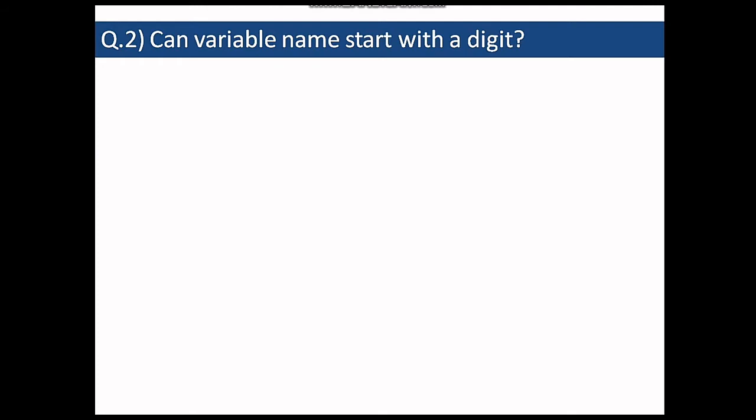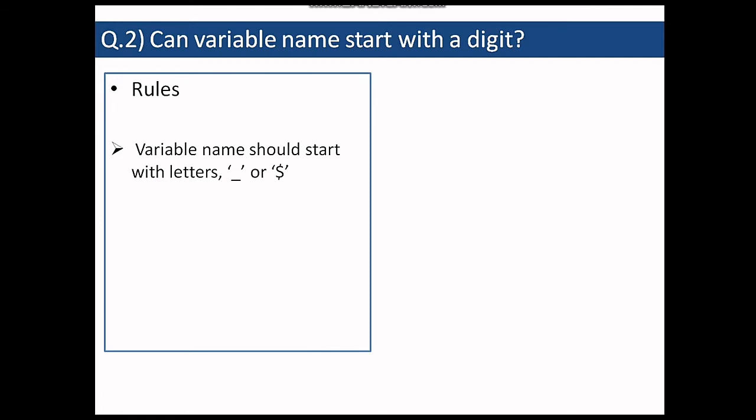The next question is can variable name start with a digit? So the answer is no, because there are some rules and conventions to follow while naming variables. So let's see both. First we'll see rules that are predefined by Java and are compulsory to follow. So the first rule says that variable name should start with letters, underscore, or a dollar sign. Anything else than this is not allowed in the variable name at the initial position.